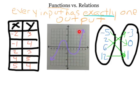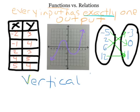When we look at the graph, we can trace its path and see that every x coordinate has only one y coordinate that goes with it — there are no repeats. There is actually a shortcut, a technique we can use to help us see if a graph is a function, and it's called the vertical line test.